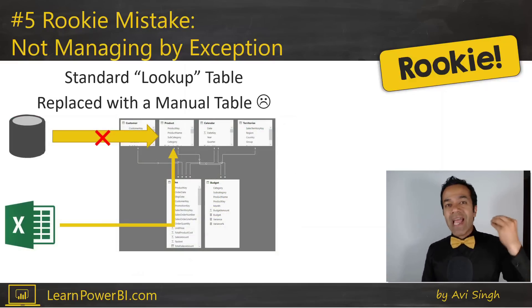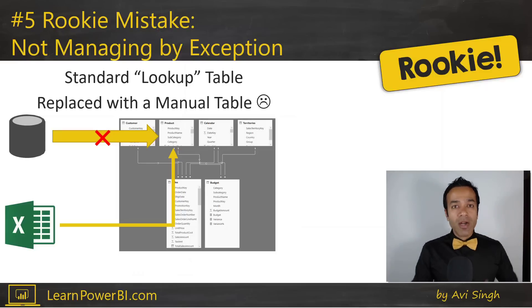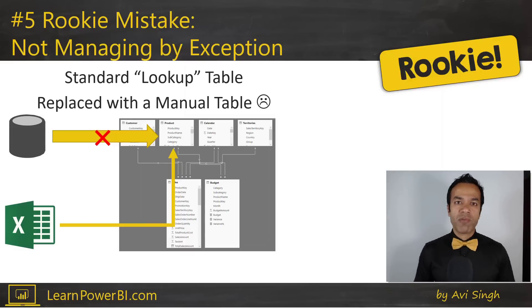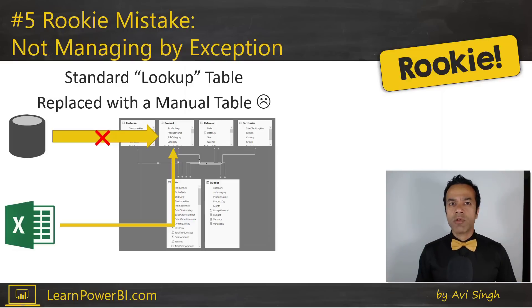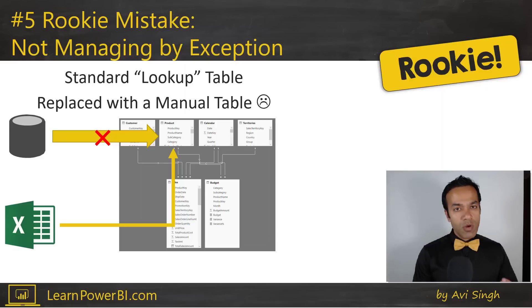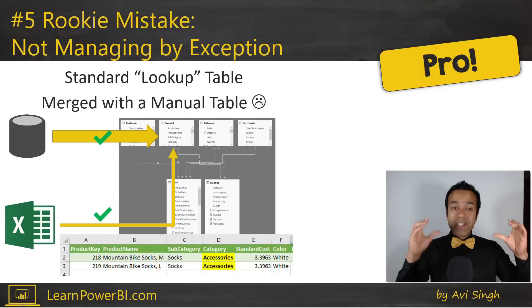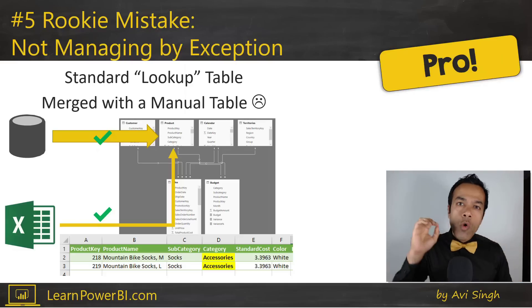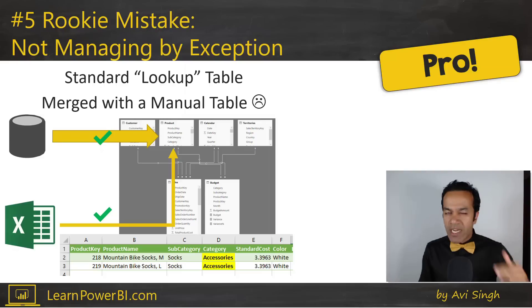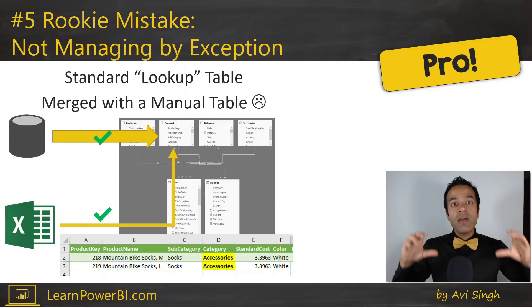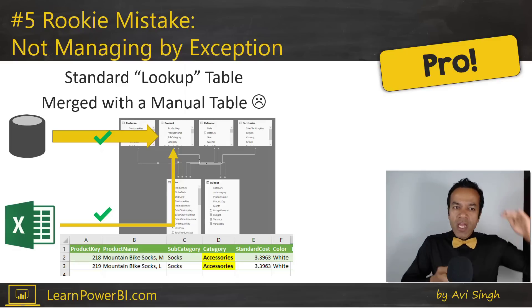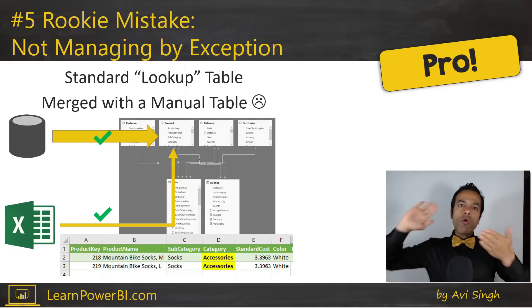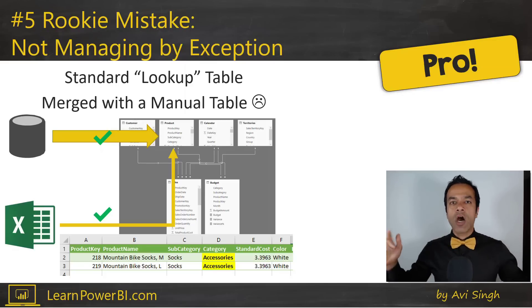Instead, adopt the pro move: use the standard table, but in your manual table, only keep the exceptions. If there are only two, five, or ten rows that need to be changed, manage those with an exception table. Then using the power of Power BI, you merge the standard table with your overriding mappings overlaid on top of it. That is a pro move.